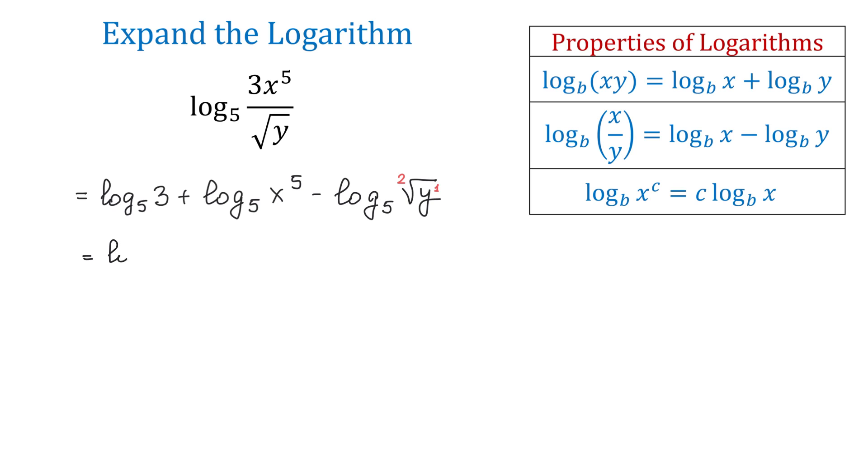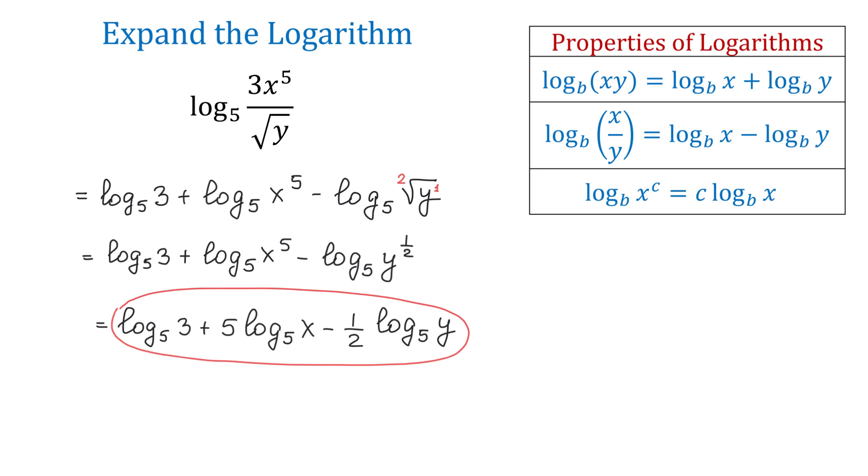Then, we will have log base 5 of 3 plus log base 5 of x to the 5th power minus log base 5 of y to 1 half. From here, we will move exponent 5 in front of the logarithm and 1 half in front of the logarithm. Then, we will have log base 5 of 3 plus 5 log base 5 of x minus 1 half log base 5 of y. And this will be the final answer.